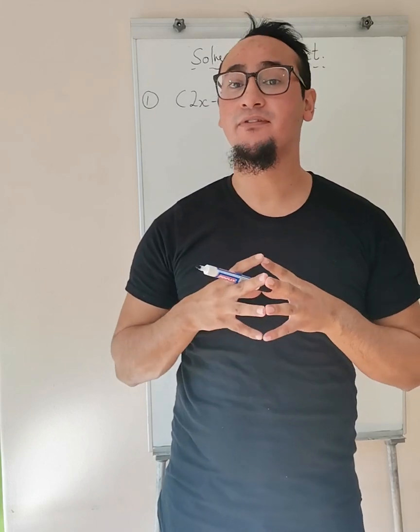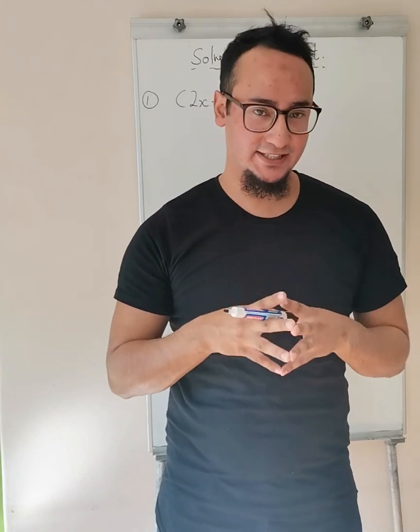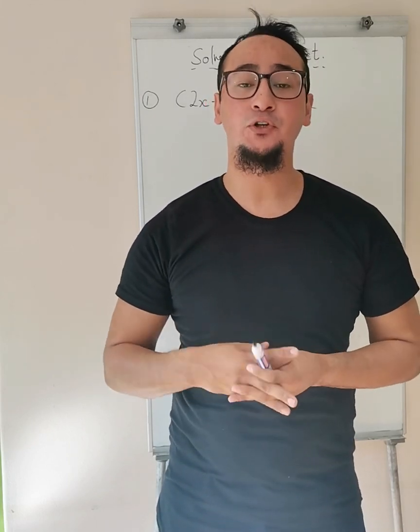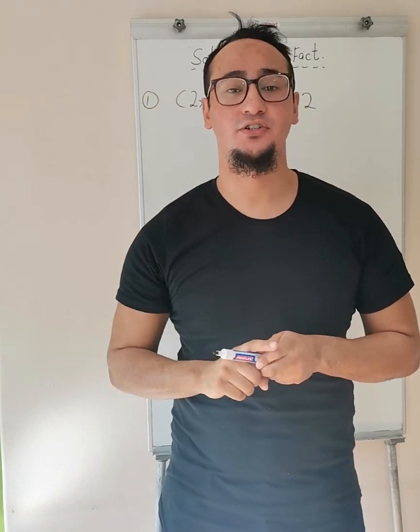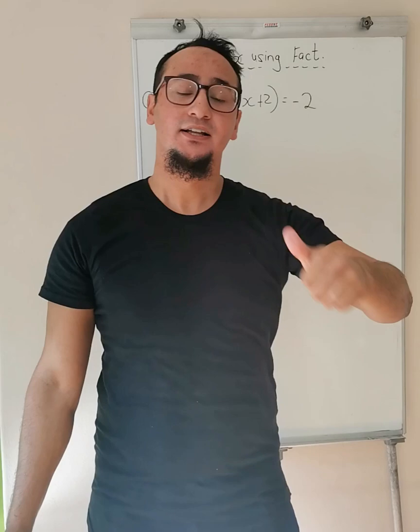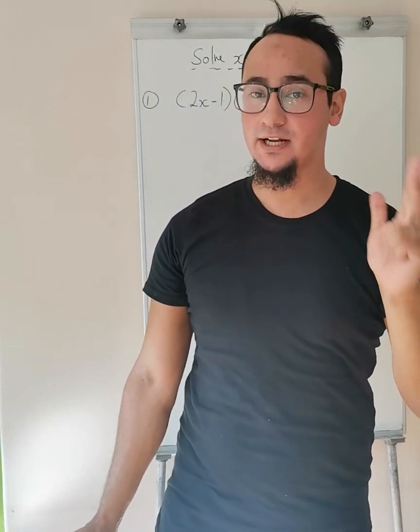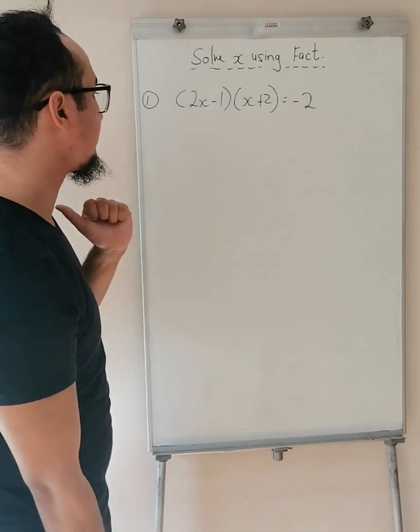Hi greetings, welcome back to GA Online Teaching. Today we are going to focus on solve for X using factorization. I'm going to do three examples with the three different types of factorization: one is the highest common factor, the second is the difference of two squares, and the third would be your trinomial. Let's begin.